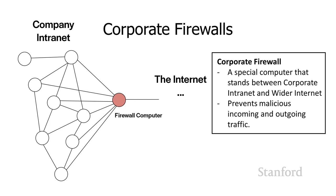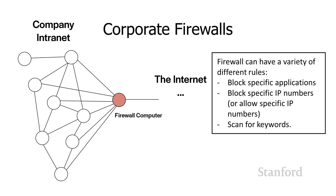A firewall computer is a computer that stands between the corporate intranet and the wider internet. It's going to prevent malicious traffic from going into the company, and can also prevent malicious information from going out of the company. There are a variety of different things that the firewall can do. One thing it could do is block specific applications, or alternatively whitelist certain applications.